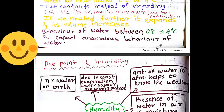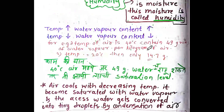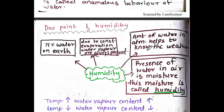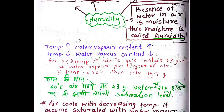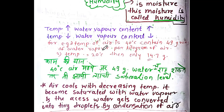Next topics are anomalous behavior of water, dew point, and humidity. When temperature increases, water vapor content increases. When temperature decreases, water vapor content decreases.